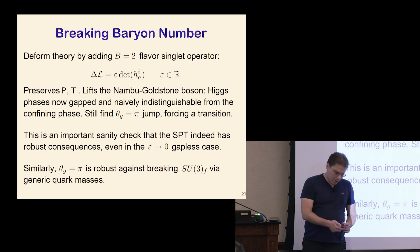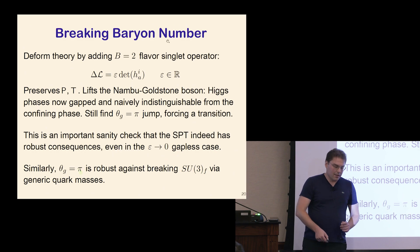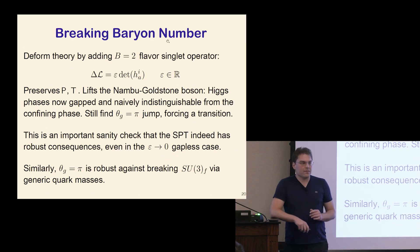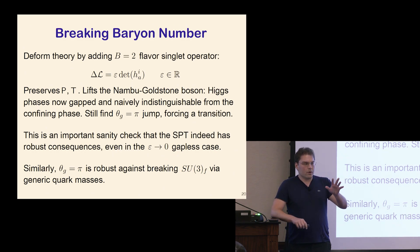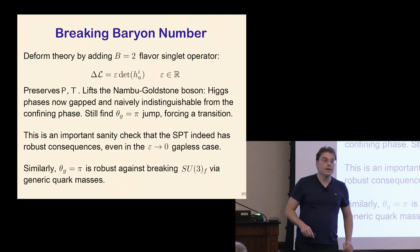Because we're talking about the gravitational theta angle, the SPT is very robust — it doesn't care about whether quark masses are exactly degenerate or whether we have exact SU(3) flavor symmetry.